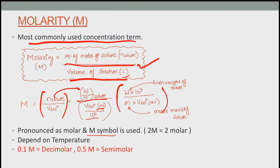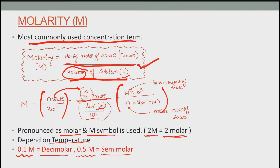Molarity is represented by capital M and is pronounced as molar — so if 2M is written on a bottle, its concentration is 2 molar. Since molarity is dependent on volume, it is also dependent on temperature. Important terms: 0.1 molar is commonly known as decimolar, and 0.5 molar is commonly known as semimolar.